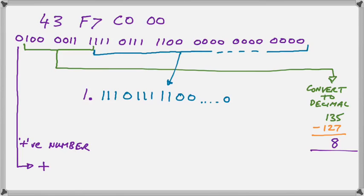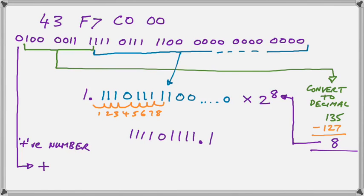As you can see, we have to move the point eight places to the right. We moved it to the left in the other operation, so now we have to move it to the right. So we move the point eight places to the right as indicated.